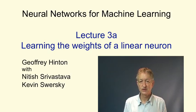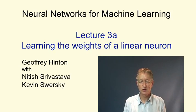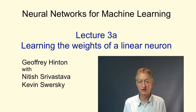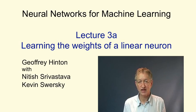This video introduces the learning algorithm for a linear neuron. This is quite like the learning algorithm for a perceptron, but it achieves something different. In a perceptron, what's happening is the weights are always getting closer to a good set of weights. In a linear neuron, the outputs are always getting closer to the target outputs.